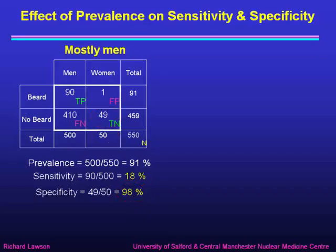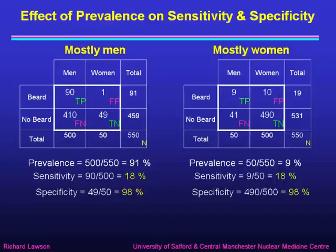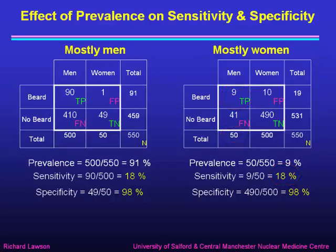Now let's look at our group of mostly women — our group of nurses — where the prevalence of men is rather low at only 9%. Our sensitivity is the number of true positives, which is now 9, as a fraction of the column total of 50 — that's 18%. And our specificity is true negatives, 490, as a fraction of the column total of 500 — which is 98%.